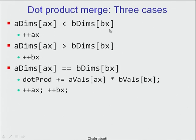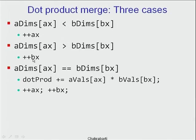For dot product: if A_dims[Ax] < B_dims[Bx], there's no match, but advance Ax. If A_dims[Ax] > B_dims[Bx], advance Bx. Only if they're equal, increment dot_product by A_vals[Ax] × B_vals[Bx], then advance both. When one array empties, the loop terminates — implicitly the other array's coordinates are 0 in those dimensions, contributing nothing.